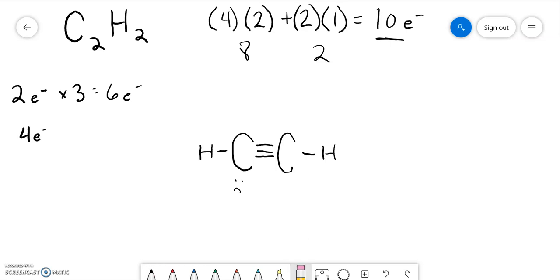And now they are both happy. Now they both have eight electrons, as represented by four bonds.